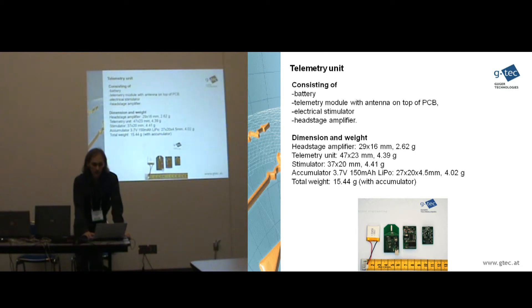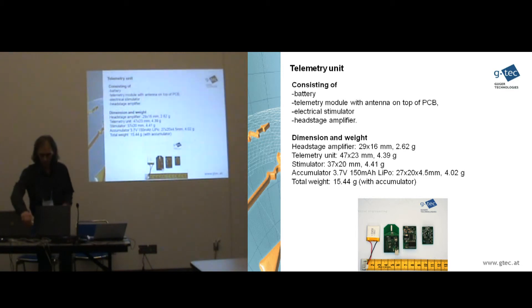We built also a small head stage telemetry system. The current system consists of a battery shown here. And the wireless module shown here with the antenna on top. This here is an electrical stimulator where you can use deep brain stimulation. This here is the head stage amplifier itself, in this case for 4 channels. So the head stage amplifier itself has a dimension of 29 x 60 mm and weighs 2.6 grams. The telemetry unit is 4 grams. The stimulator 4 grams. The accumulator 4 grams. So this gives you in total 15 grams that you have to put onto the head of the rat. So I can also pass it around. This is the small head stage amplifier that we used for the spike recordings with the adaptation board. You can also have a look.